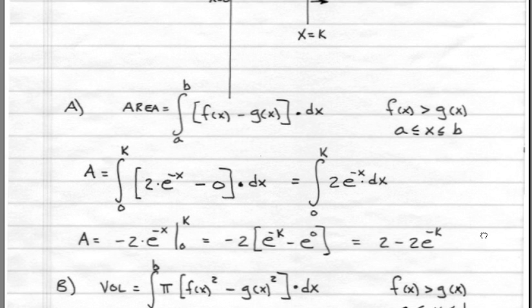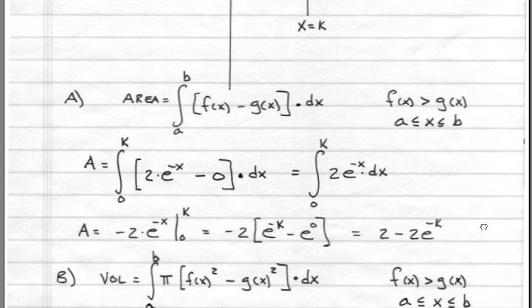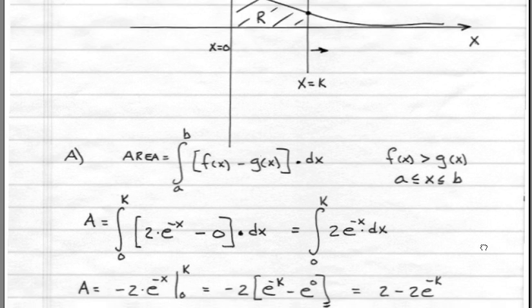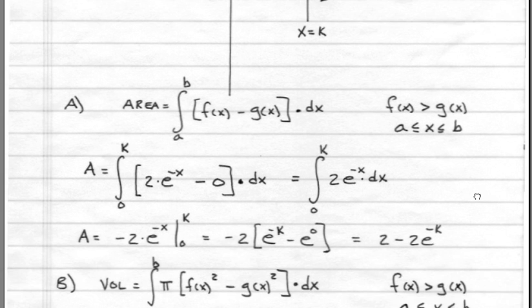The next portion asked us to find the volume of this region. Let's go back and look at the region. We have R, and we're going to rotate this about the x-axis out of the page 360 degrees. We have to know the formula for this.